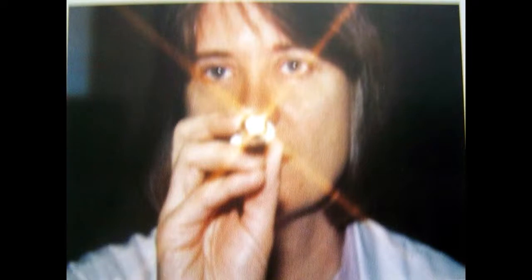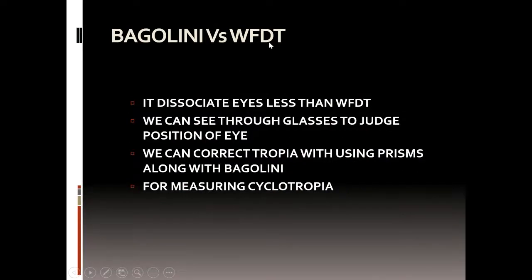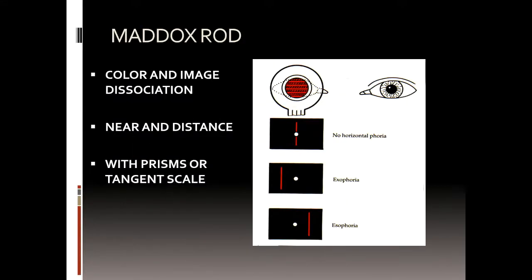Bagolini's test is again very simple — lenses at 45 degrees and 135 degrees. If the patient is able to see the cross, they have binocular vision. If only one line is visible, the other eye is suppressed. If there is a central scotoma, it is central suppression. Bagolini is better than the Worth 4-dot test because the dissociation is very minimal — you can see through the glass, judge the position of the eye, measure cyclotropia, and it is more physiological. These two tests are wonderful and easy to understand. The reason for 45 and 135 degrees is that these are theoretically the last angles to go under suppression.